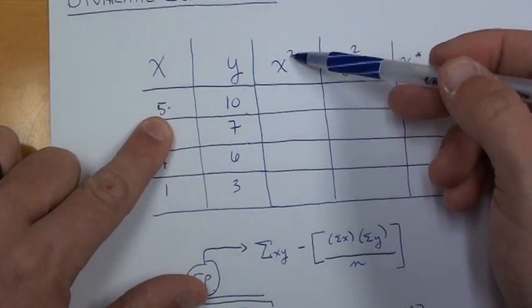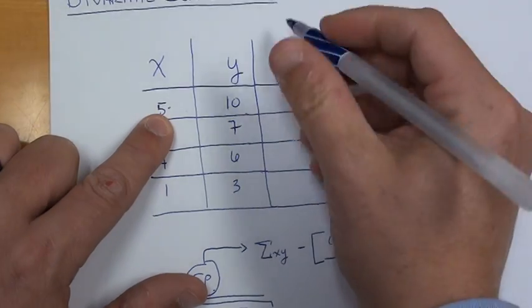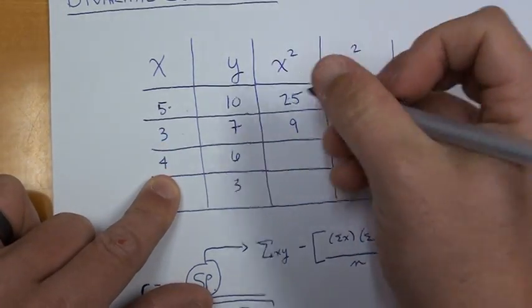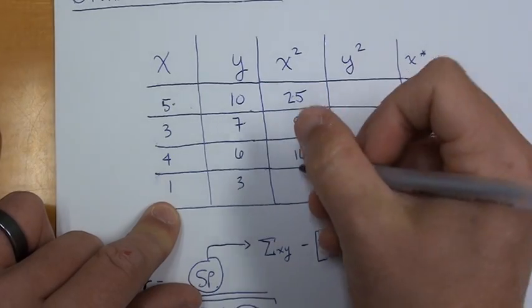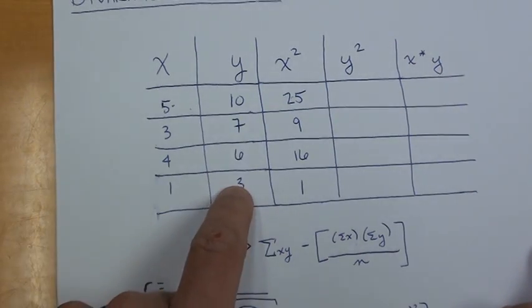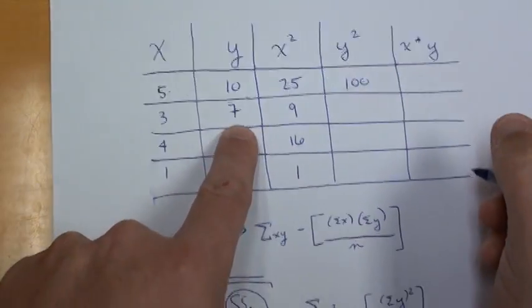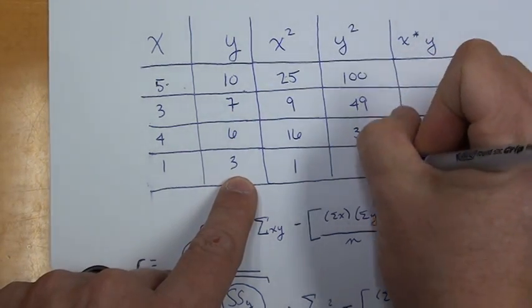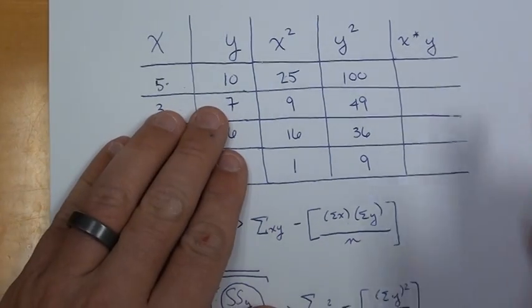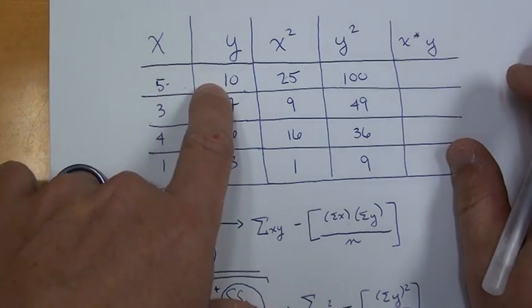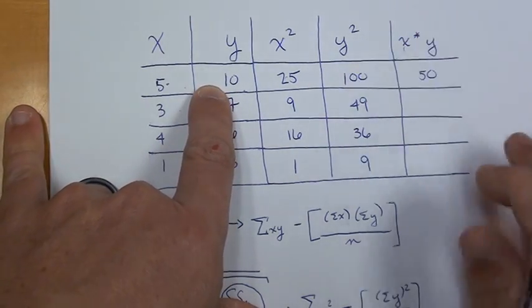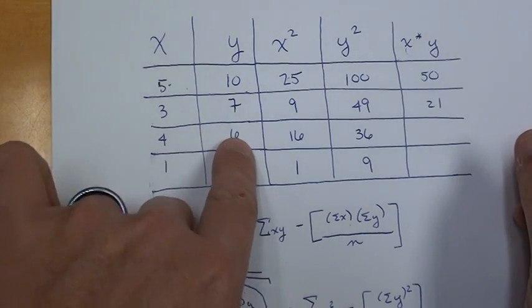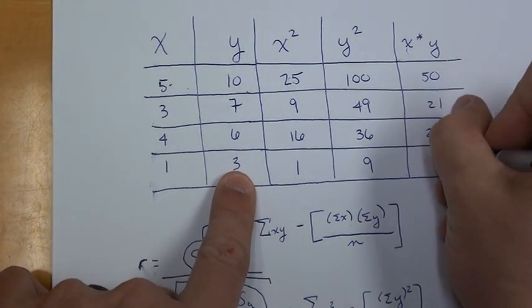So, for X squared, we're going to take our X values from here and square it and put it here. So, 5 is 25, 3 is 9, 4 squared is 16, 1 squared is 1. Now, we're going to do the same thing for the Y column. 10 squared is 100, 7 squared is 49, 6 squared is 36, 3 squared is 9. Now, for this final column, we're going to multiply 5 times 10 and get 50. We're going to do that for the X's and the Y's across the row. 3 times 7 is 21, 4 times 6 is 24, 1 times 3 is 3.